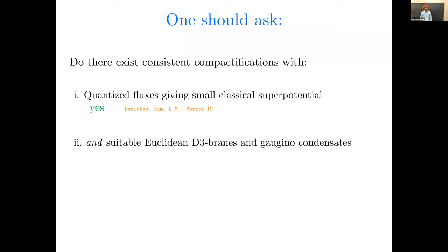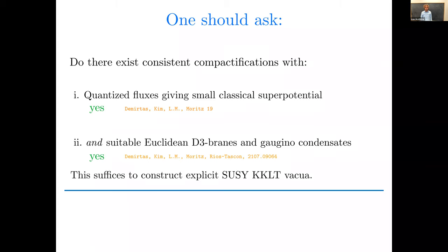Okay, and now there's a statistical argument that says that although small w0 is not generic, it should occur for some of the exponentially many choices of quantized flux. And so the general idea, going back many years, was, well, there ought to exist vacua out there that are very well controlled. The trouble, as I'll review throughout this talk, is how do you actually find them? So what one should ask, based on this proposal of KKLT, is do there really exist consistent compactifications with, one, quantized fluxes giving small classical superpotential, and suitable Euclidean D3 brane and gaugino condensate contributions to the superpotential for the Kähler moduli? And the answer to these questions, yes.